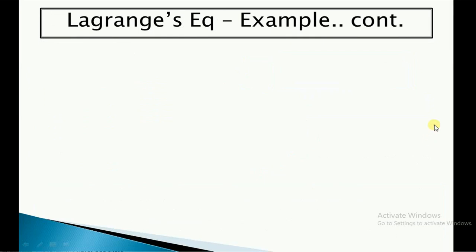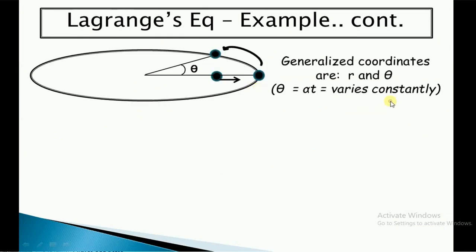What are the generalized coordinates in the system? We have a mass that can move on the rail, and the rail itself is moving, so we get two coordinates. One is r, the position of mass m with respect to the fixed point, and the other is polar angle theta. But theta varies constantly — theta equals alpha*t — as the rail rotates with fixed angular velocity.